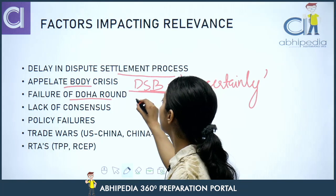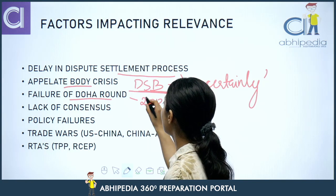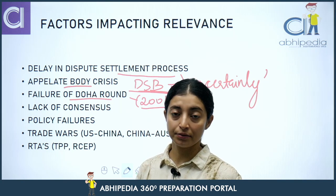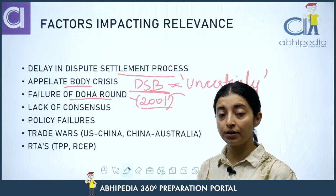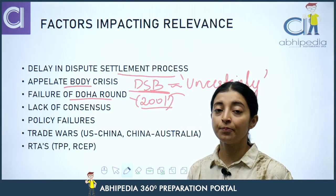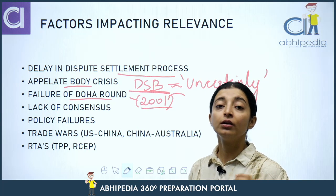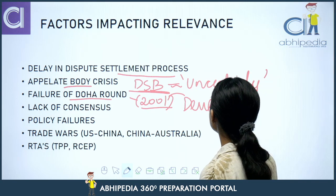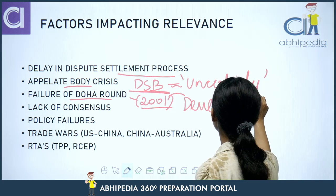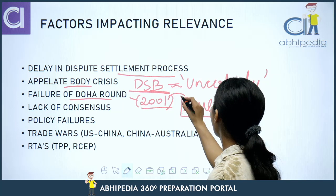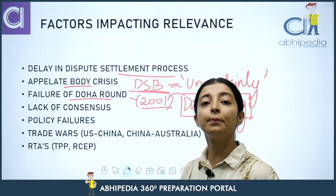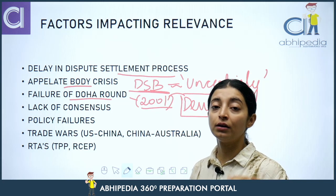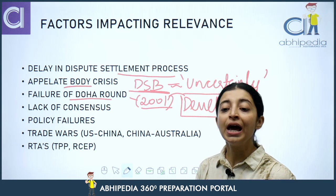The Doha Round was a major trade round whose negotiations started in 2001. After many years of negotiations, no result came out because there was no consensus among nations. So the Doha Round is considered a failure. This round was intended to be in the interest of developing nations — to balance trade towards them and bring trade reforms to better their position. But the round failed, which is again a question on the relevance of WTO.